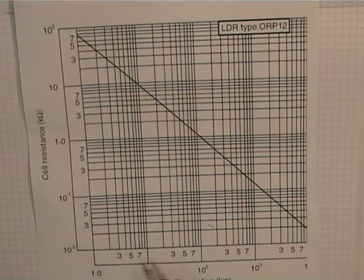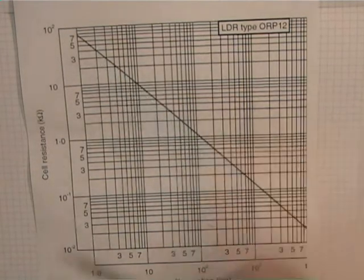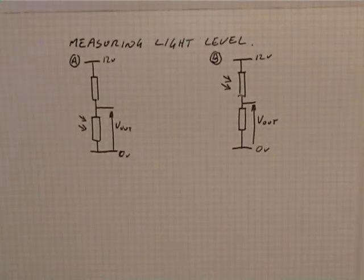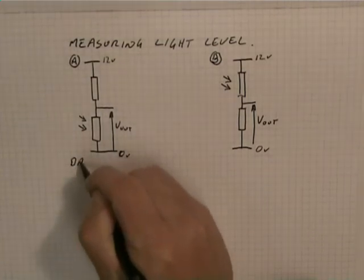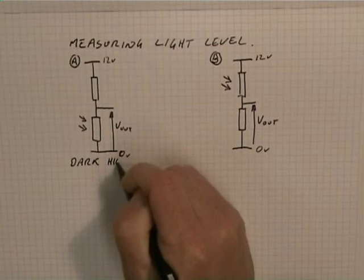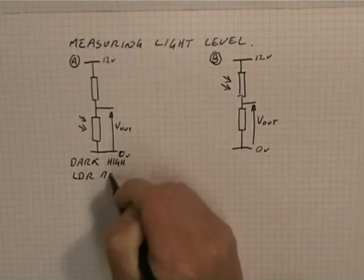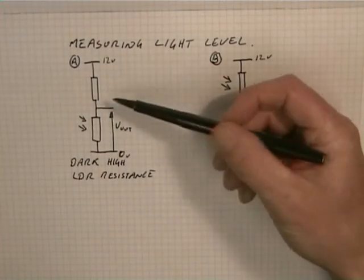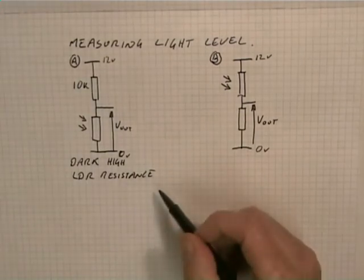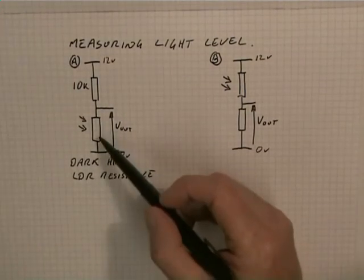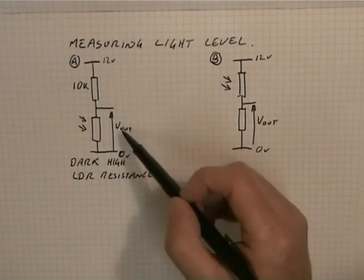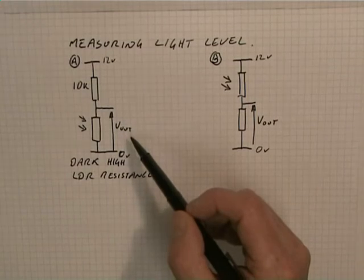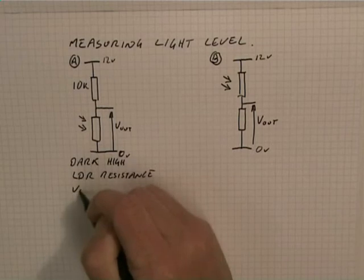Now as it gets lighter, the resistance of the LDR decreases. The lighter it is, the smaller the resistance for the LDR. If we start with this one in the dark, it's got a high resistance, high LDR resistance. This resistor here is fixed, say it's like a 10k. So in the dark it's around about 70,000 ohms. Most of the voltage will appear across Vout. So in the dark, Vout will be big.